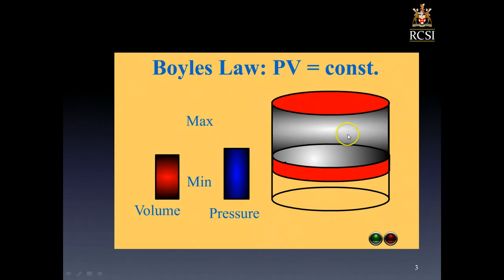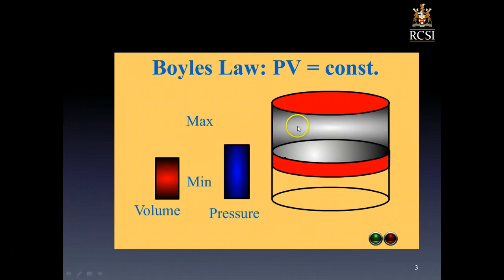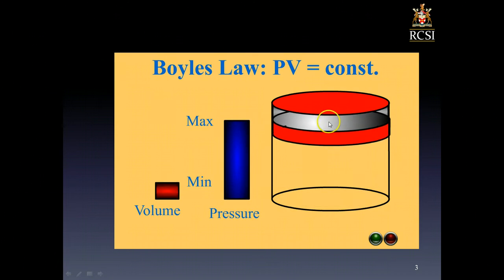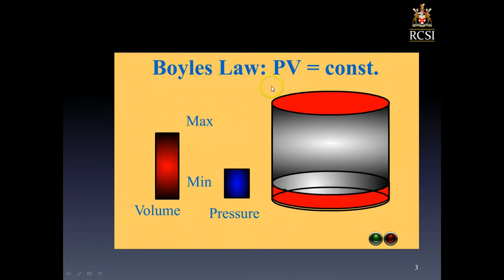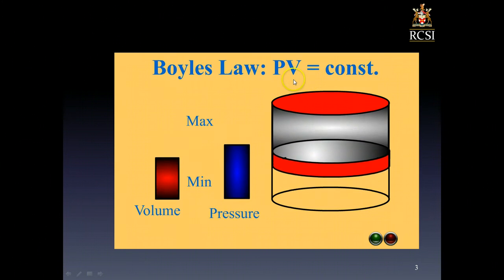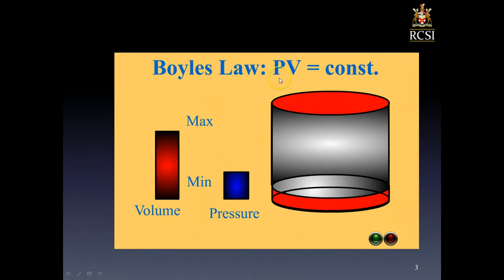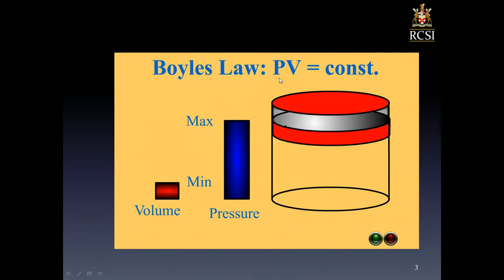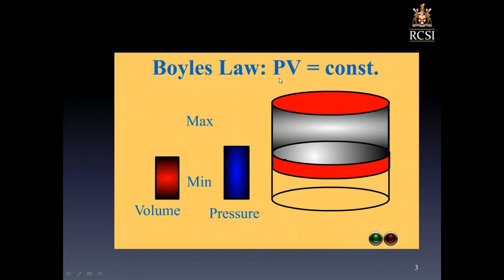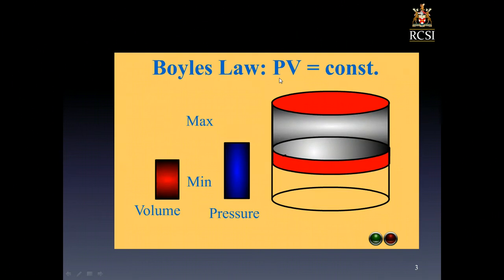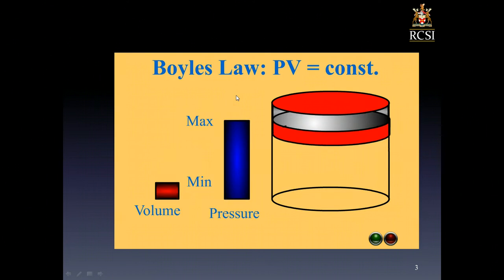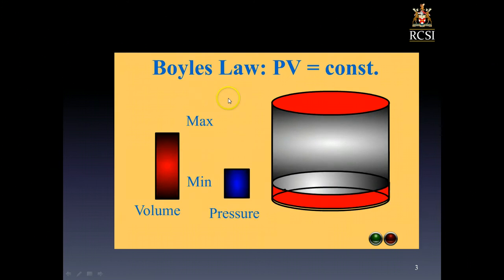Here we have an enclosed gas in a piston. The volume is varying and the pressure is varying. Boyle's Law states that for this fixed mass of enclosed gas, the volume multiplied by the pressure is constant. So if the volume decreases, the pressure increases. But more importantly for diving situations, variations in pressure will cause corresponding variations in volume.